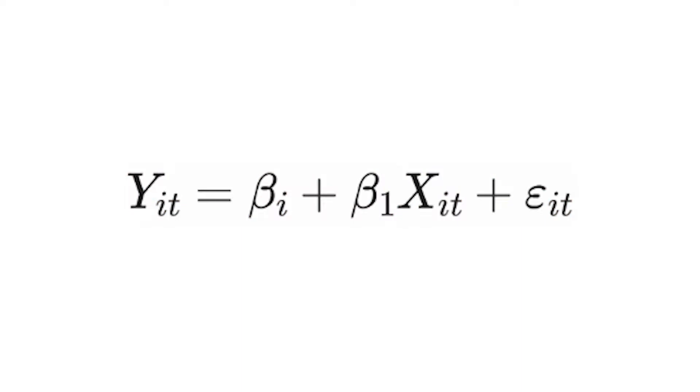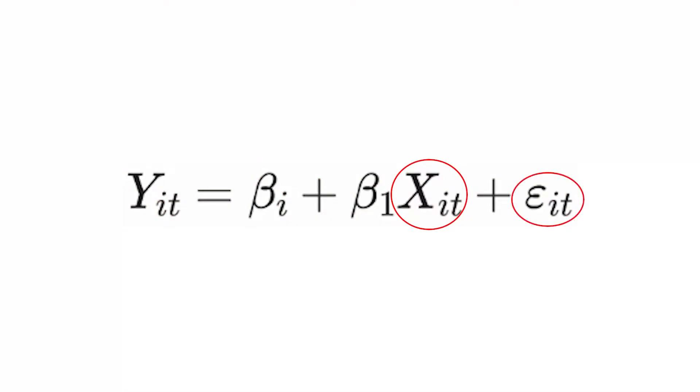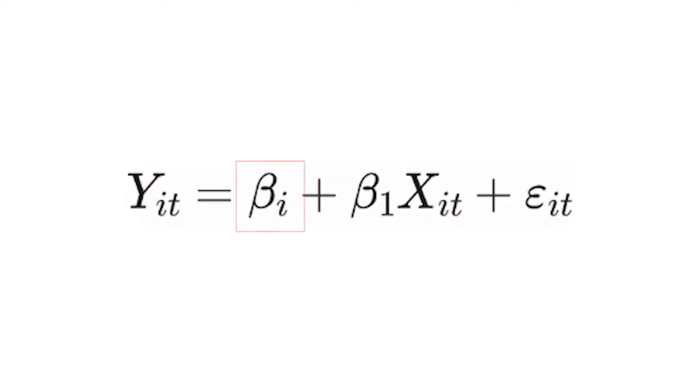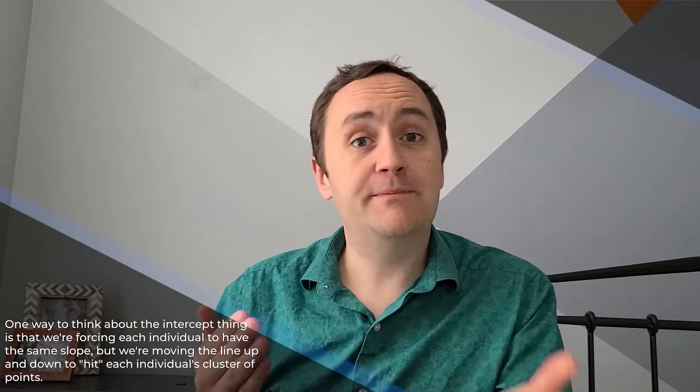Typically we set up a fixed effects model that looks like a standard regression model, with a couple of differences in the subscripts. We have Y subscript i,t — meaning Y varies over both individual i and time t — indicating panel data where the same individuals are measured across multiple time periods. The same applies to X and the error term. The intercept now has an i subscript, meaning each individual i gets their own intercept.